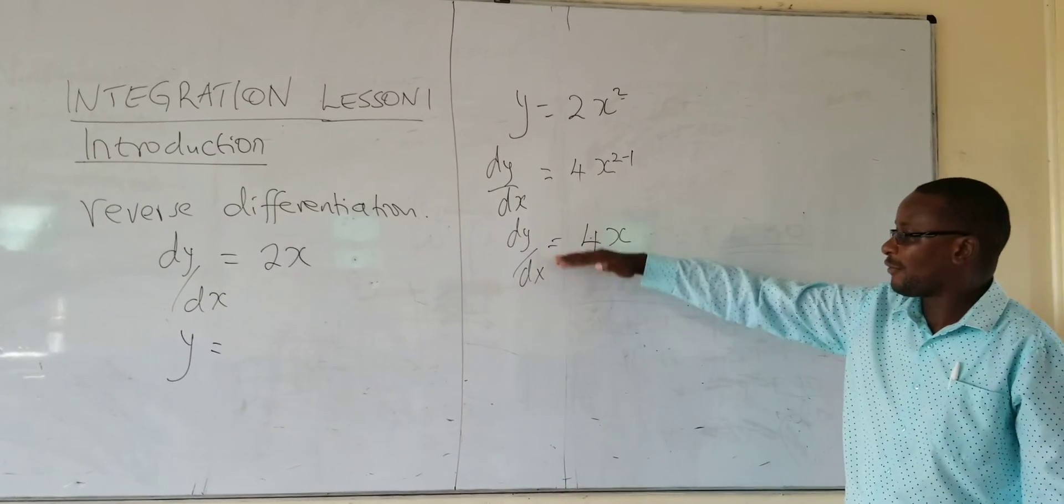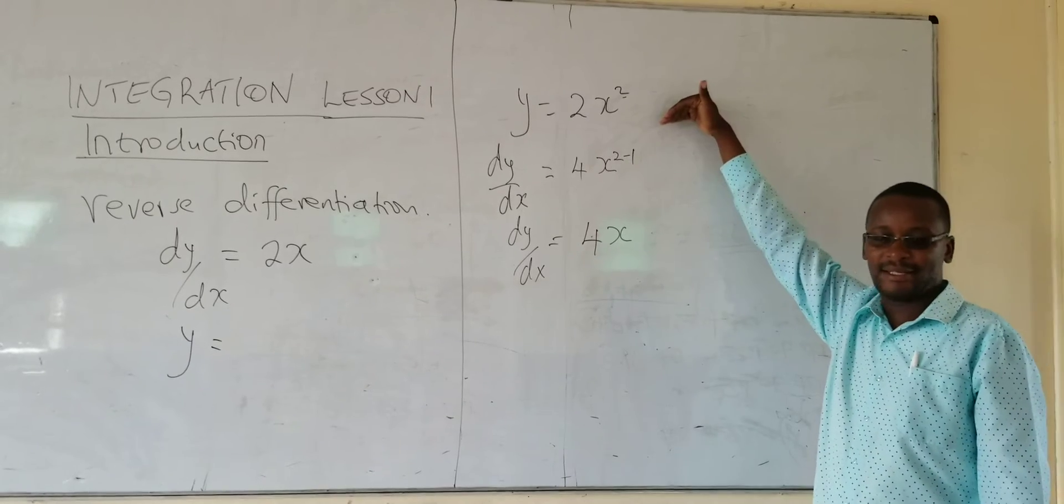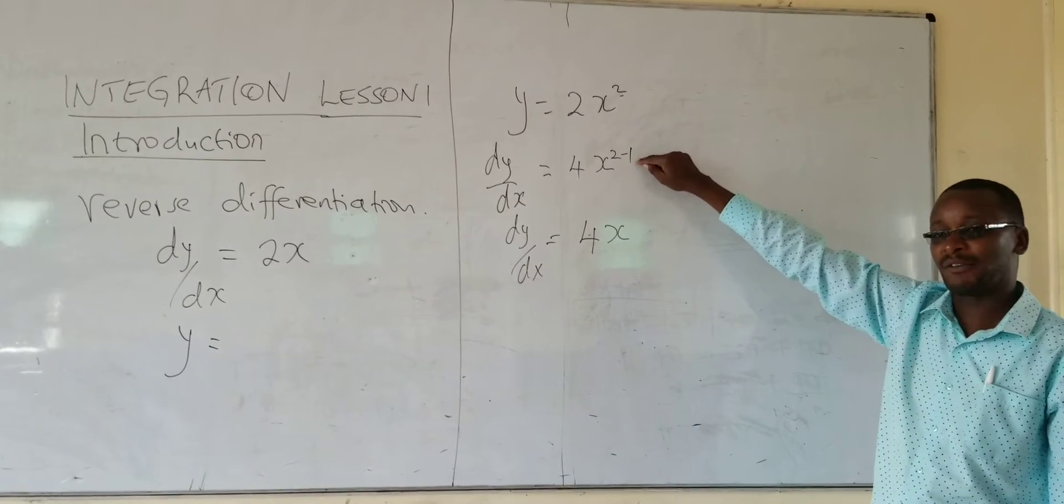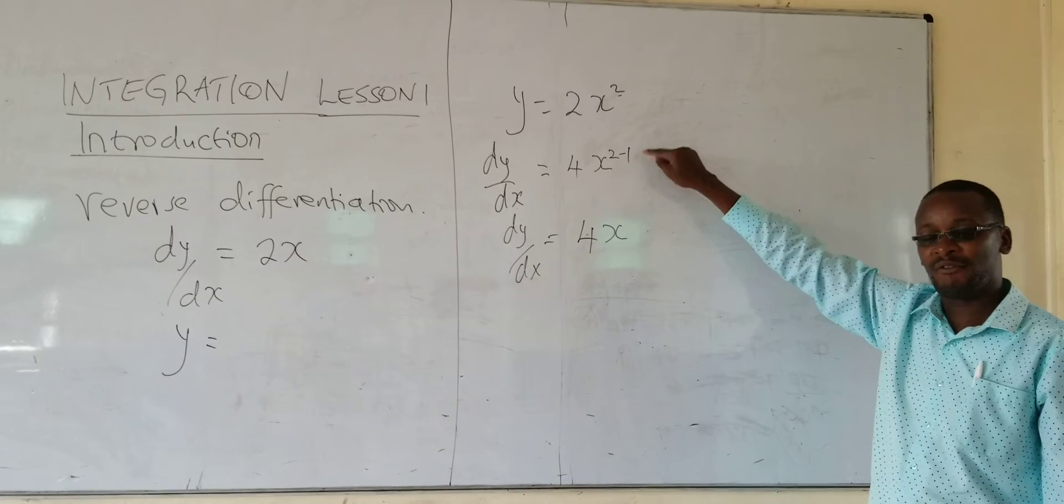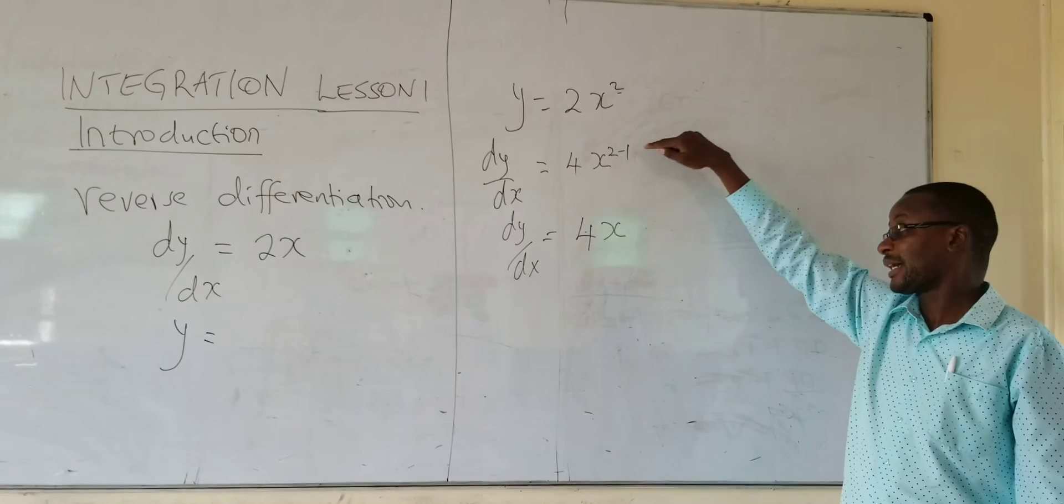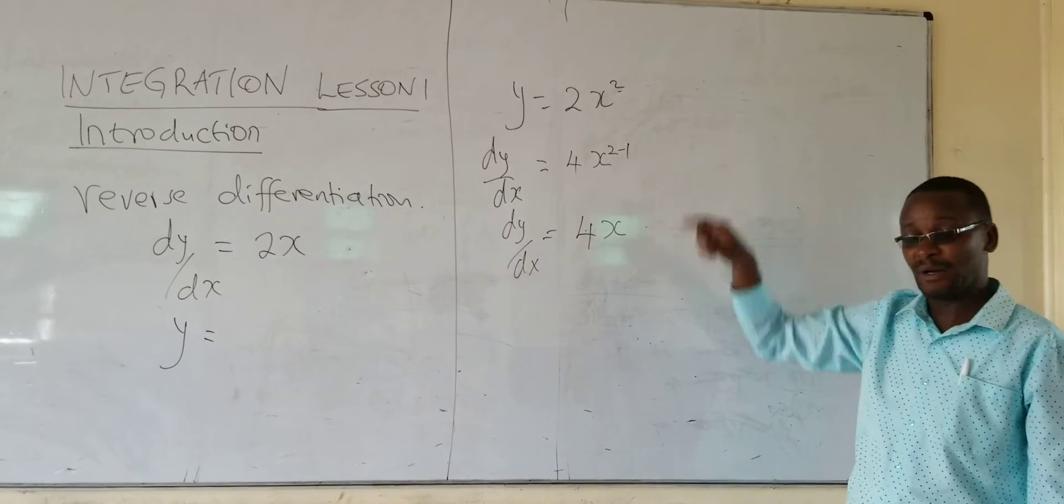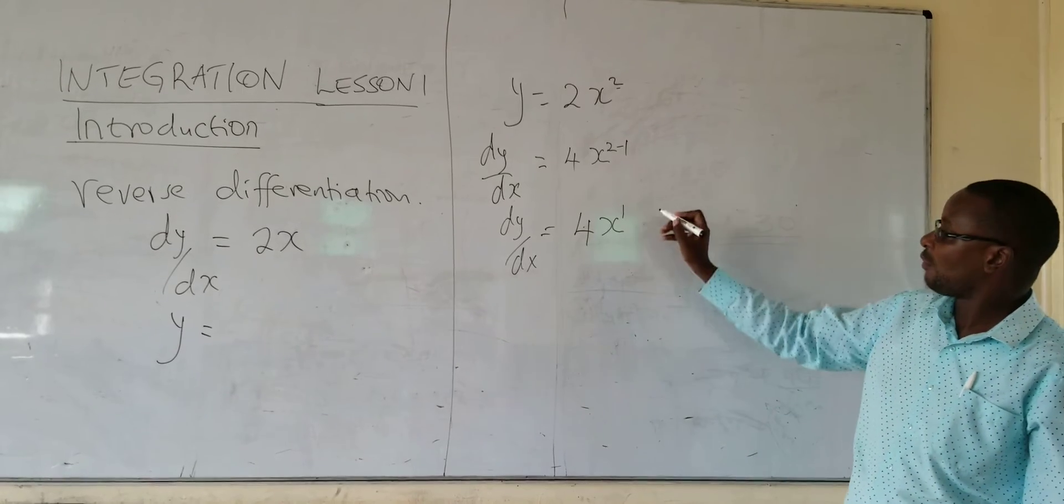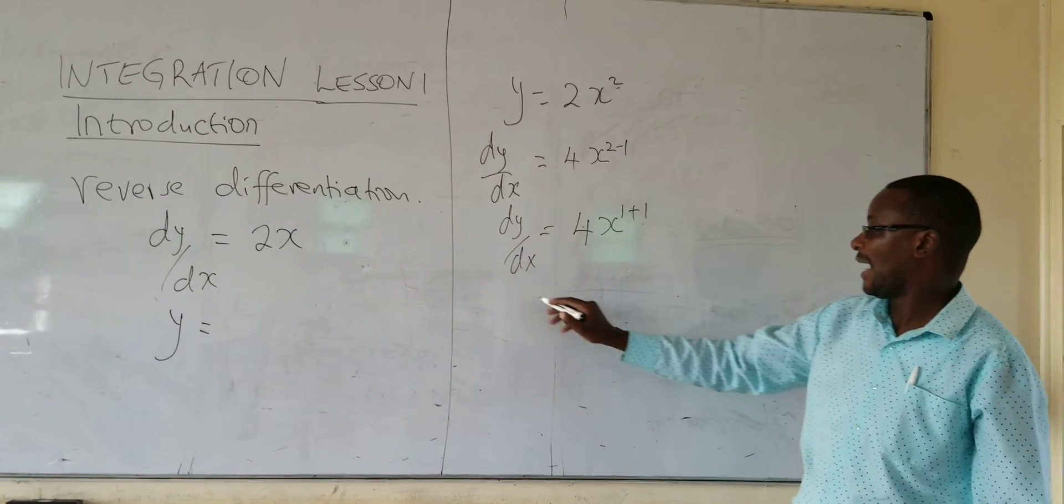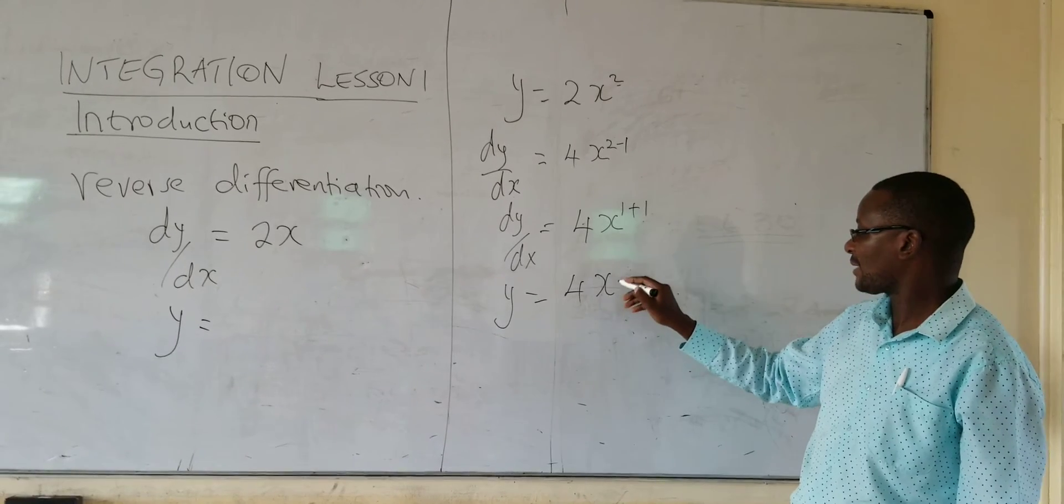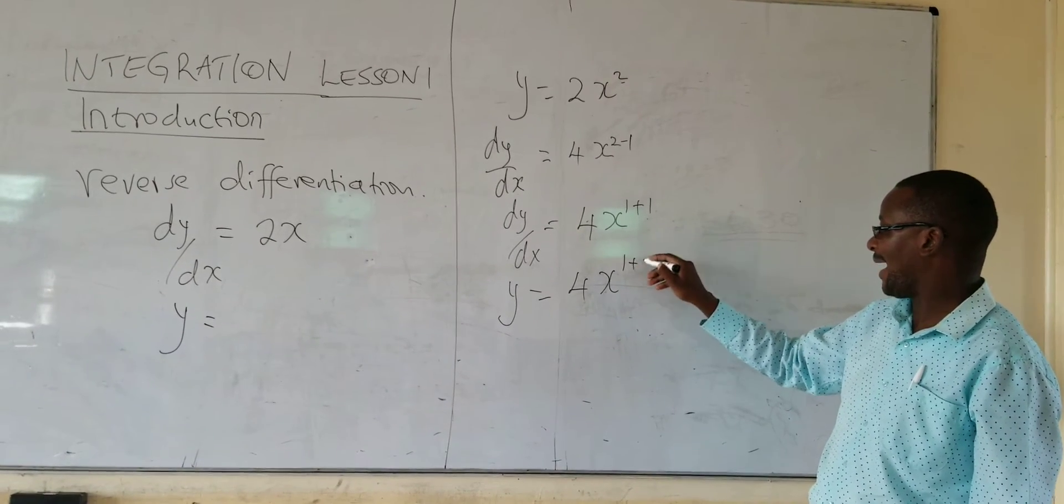Now we want to go back from dy over dx back to y until we get back here. So our last step here of subtracting 1 will be our first step but in reverse. So instead of subtracting 1, we will now be adding 1. So here I have x being power 1. So I am going to add 1 as I get y. So y is equal to 4x. The power is 1. I add 1.